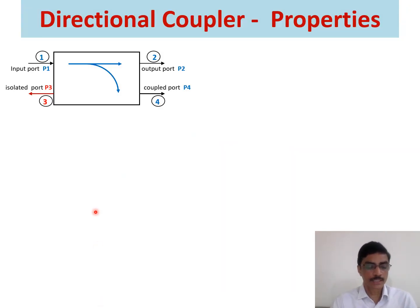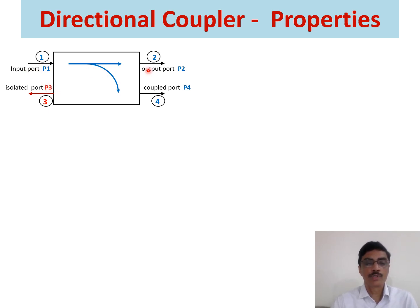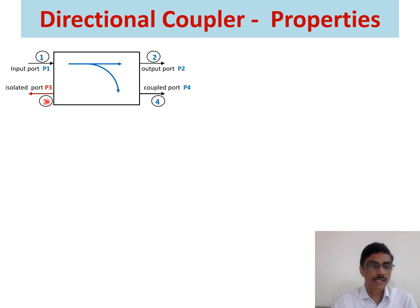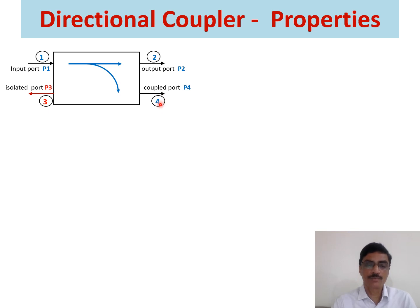This figure represents the schematic diagram of a 4-port directional coupler. These 4 ports are denoted as port number 1 as the input port, port number 2 as the output port, port number 4 as the coupled port, and port number 3 as the isolated port. Port number 1 and port number 3 are adjacent ports which are isolated ports. Similarly, port number 2 and port number 4 are also known as adjacent ports and are isolated ports.